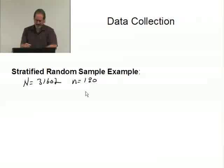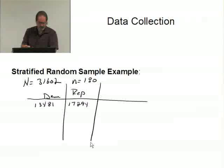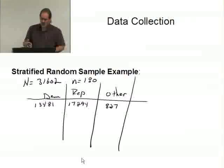Okay, now here's a situation. Let's just suppose, in this particular community, the Democrats, there are 13,481 registered Democrats. The Republicans, let's just say, have 17,294 registered voters. And, because the other groups were so small, we clumped them together, and there are actually 827 others.